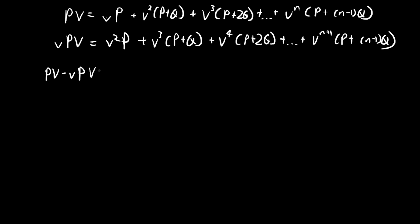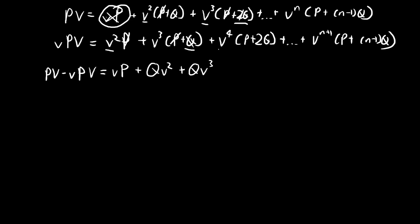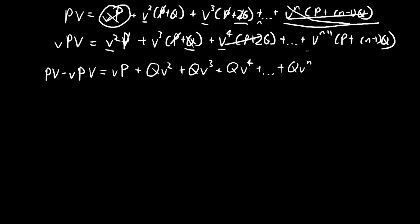The next step is to subtract these expressions. First, we save the leading term V·P. Comparing the V² terms, the P's cancel, leaving Q·V². For the V³ terms, the P's cancel; we had 2Q minus Q, leaving Q·V³. The same happens for V⁴, leaving Q·V⁴. This reasoning continues, giving Q·V^N. The last term V^(N+1)·(P+(N-1)Q) doesn't cancel with anything, so we write it out explicitly.